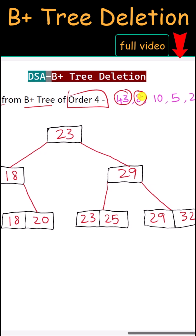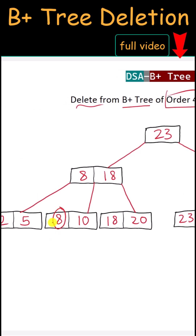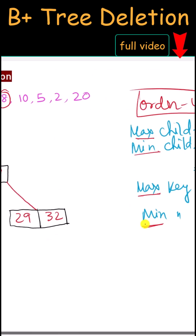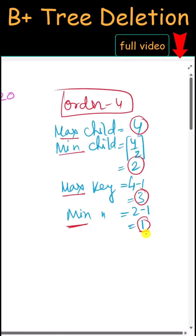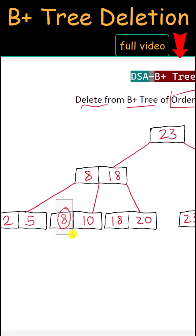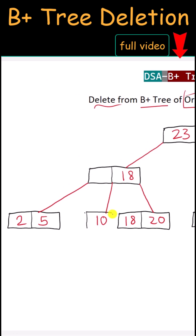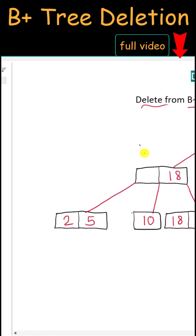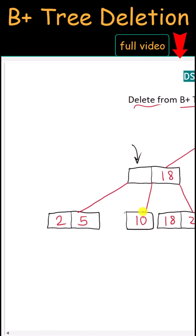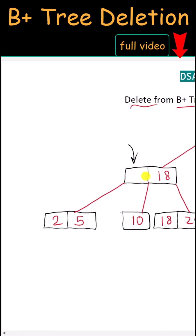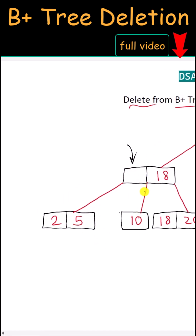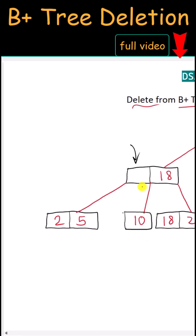Next we delete 8. This node has more than the minimum number of keys, so we can simply delete it from the leaf. We also have to delete it from the internal node. Now we are left with only one value there, and that part is empty, so it will be filled by the minimum value from the right child, which is 10.